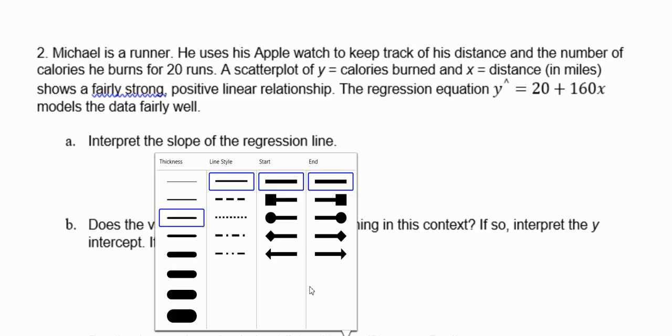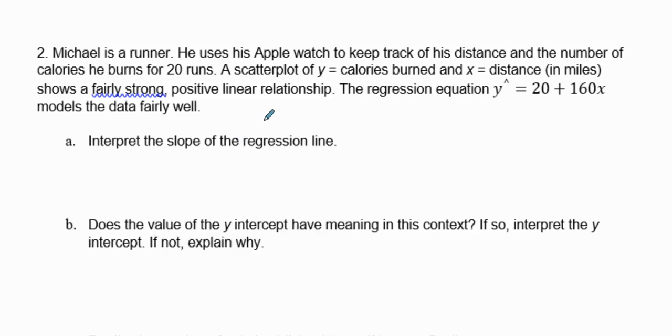In number two, we have Michael, a runner who uses his Apple watch to keep track of distance and the number of calories he burns for 20 runs. The scatterplot shows y equals calories burned, which is our response variable.